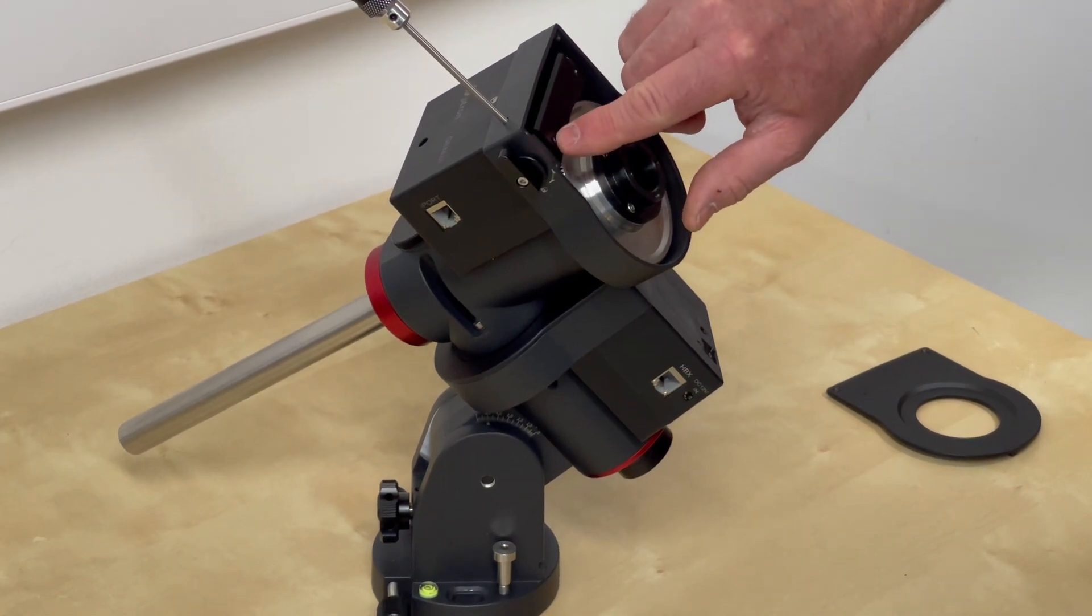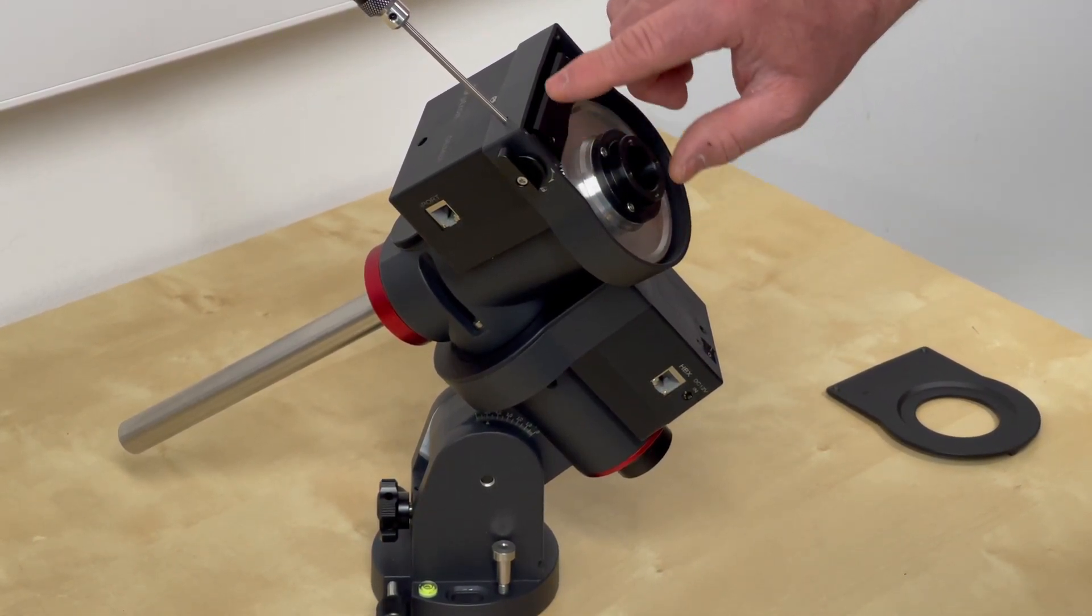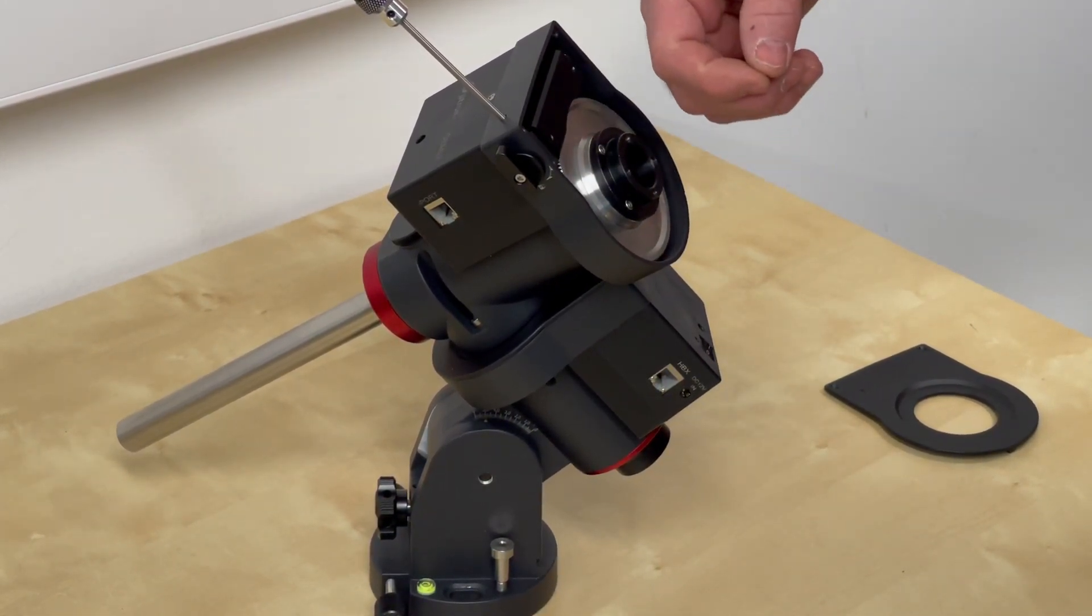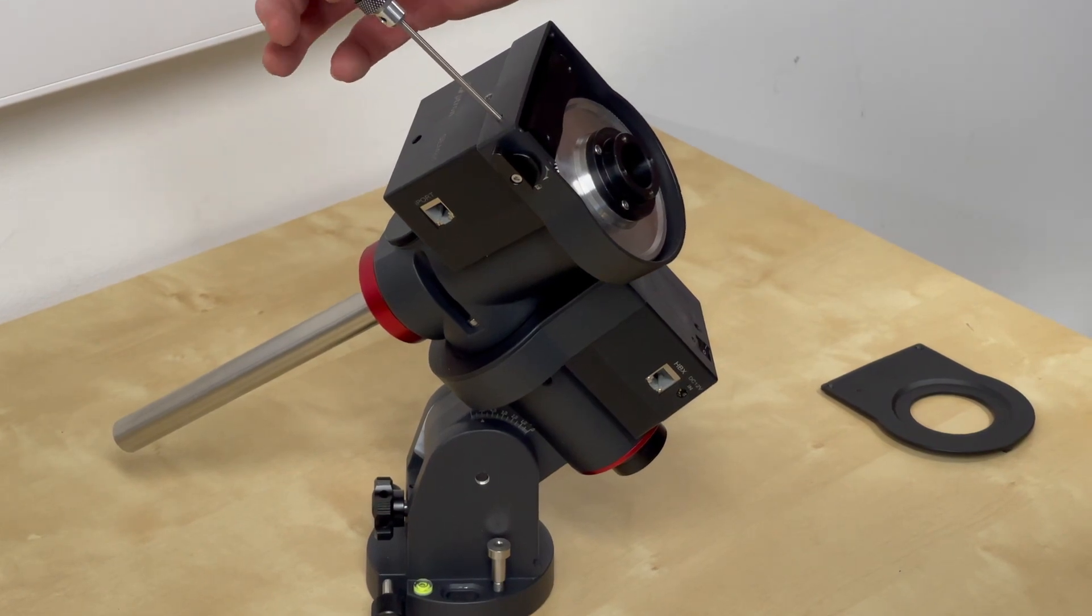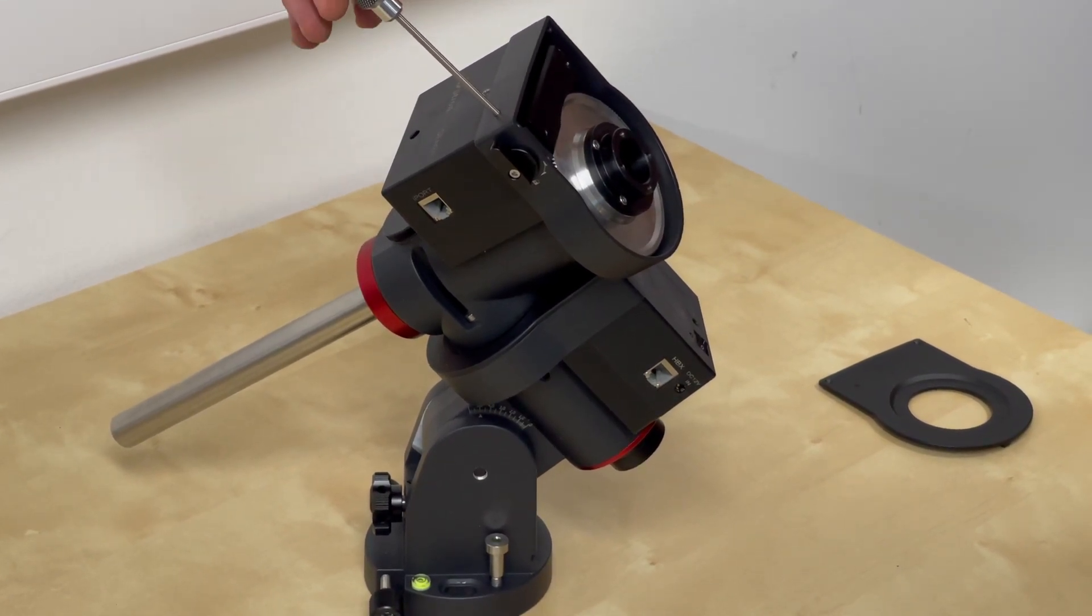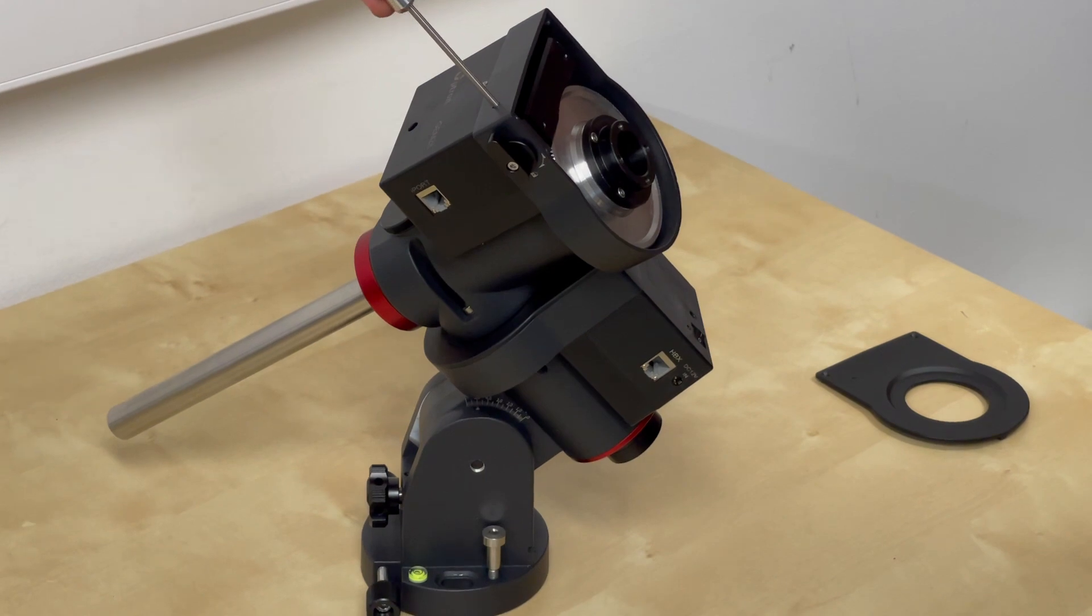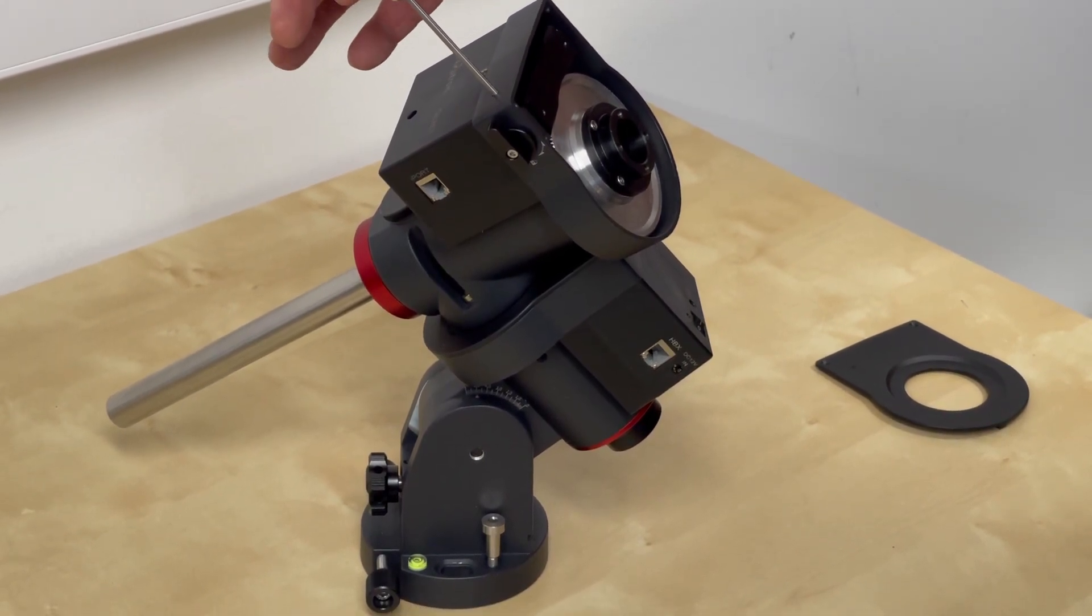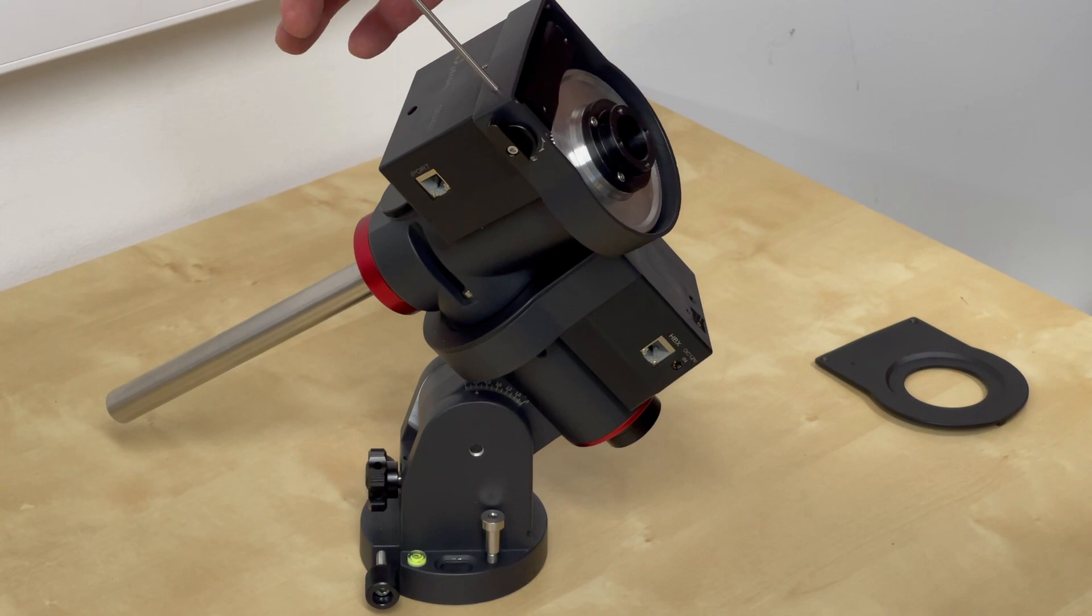So I've adjusted or undone this grub screw which releases the main adjustment screw. Now if I do this one once it gets in the hole, if I do that up, just nip it so that it just feels slightly tight.